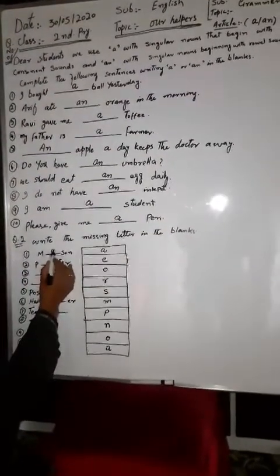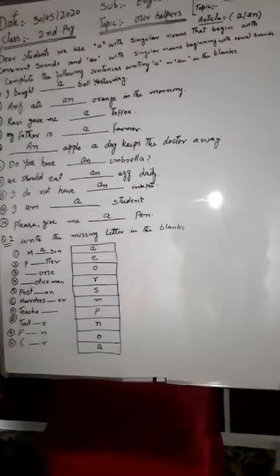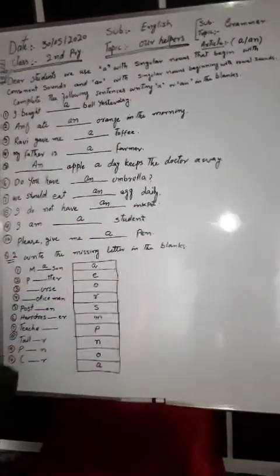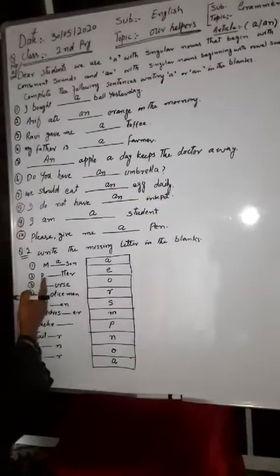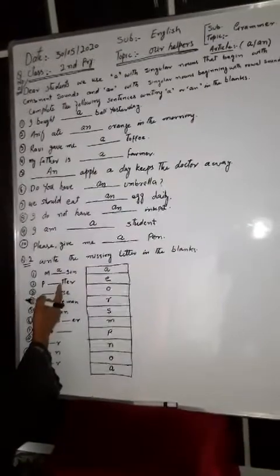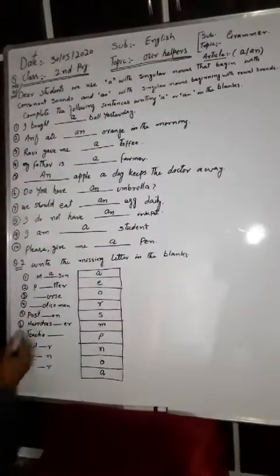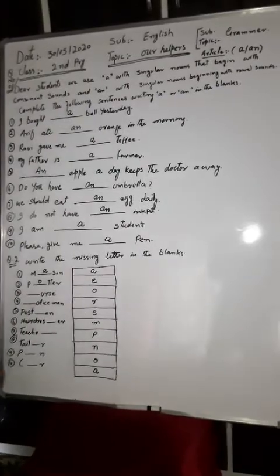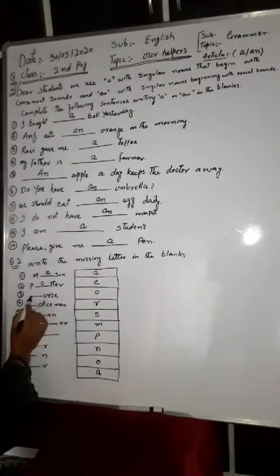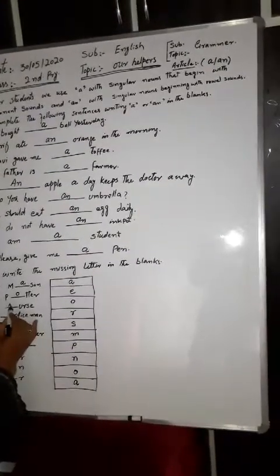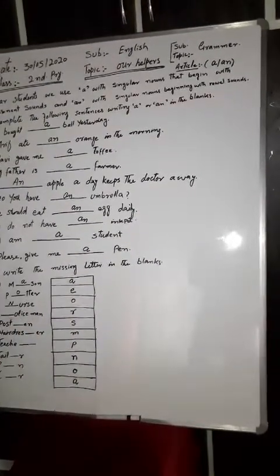Shop, box number two: P dash O, T, T, E, R. Potter. Then N, U, R, S, E. What is it? Nurse. 'N' - nurse. Correct.